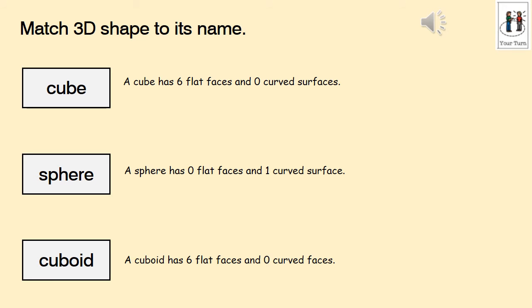Now we're going to match 3D shapes. A cube has six flat faces and zero curved surfaces. A sphere has zero flat faces and one curved surface. A cuboid has six flat faces and zero curved faces. The difference between a 2D and 3D shape is 2D shapes are flat.